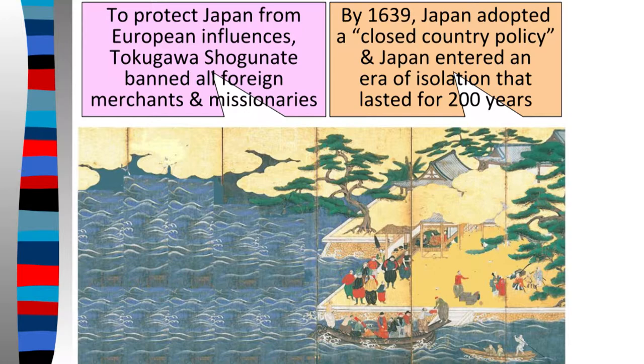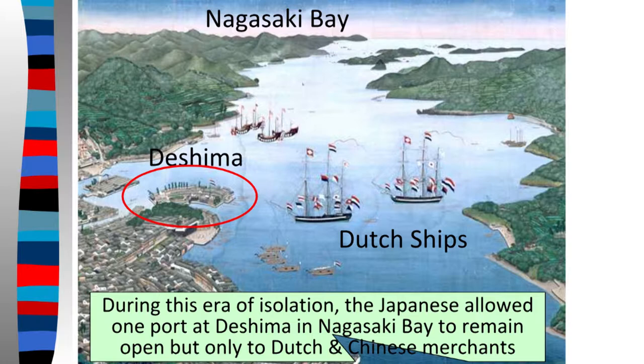That era of isolation lasted about 200 years. During that time, the Japanese allowed one port at Nagasaki Bay to remain open, but it was pretty much only Dutch and Chinese merchants. For the most part, the Japanese were very isolated — it really preserved their culture, but at the same time it put them behind technologically.